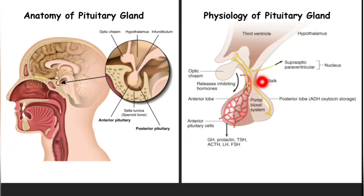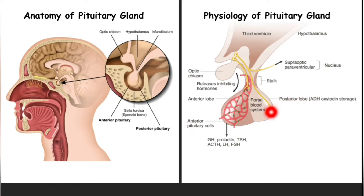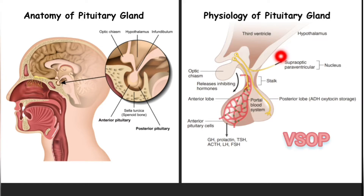Let's review the hormones, starting with the posterior pituitary. The posterior pituitary is neural tissue — it doesn't produce hormones, it only stores them. The hormones stored are ADH (vasopressin) and oxytocin, which are actually produced by the supraoptic and paraventricular nuclei in the hypothalamus. A mnemonic to remember: V-SOP — vasopressin from the supraoptic nucleus, oxytocin from the paraventricular nucleus.